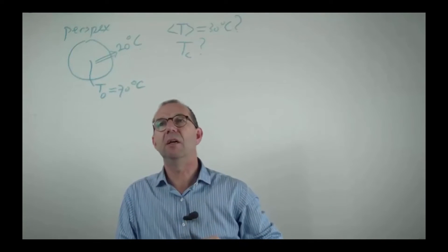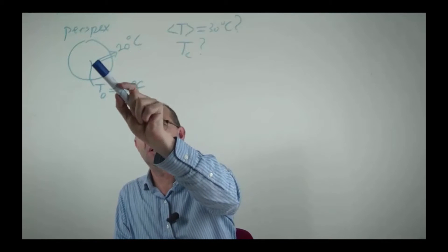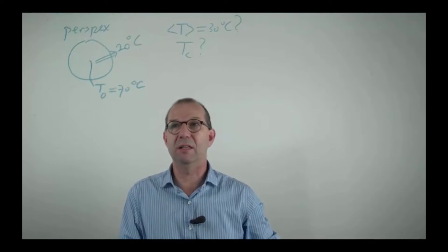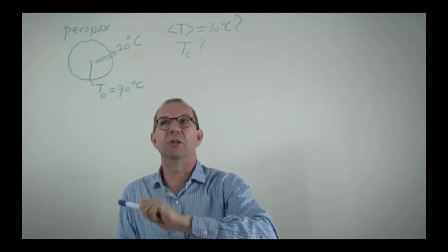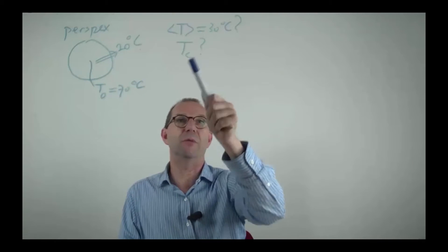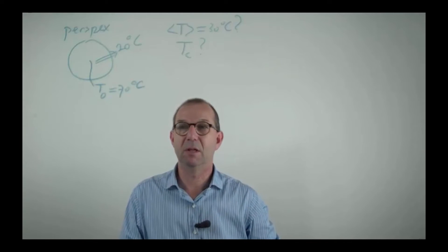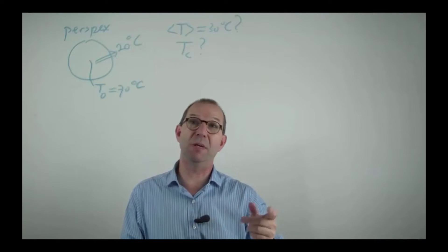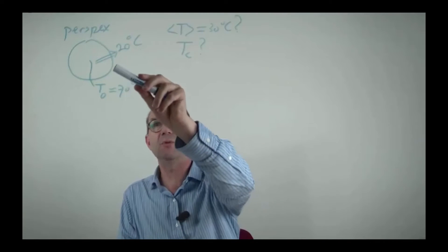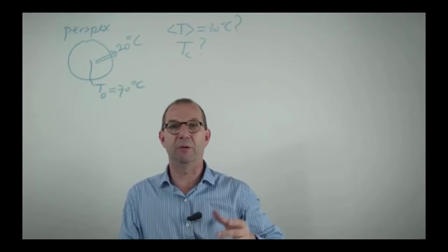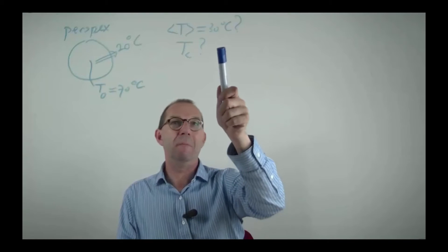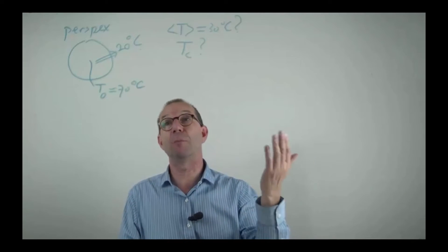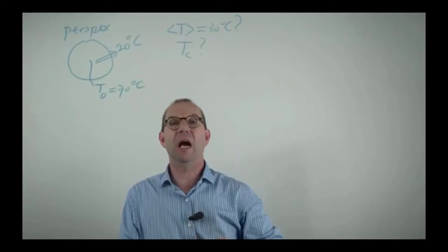This is clearly a case of heat conduction. Heat from the inside has to move outside. It's clearly also unsteady as the temperature of the perspex sphere will need to change from 70 to 30. Moreover you can quickly grasp that this must be long times. For short times only the boundary of the sphere will have changed its temperature and by no way can we expect that the mean temperature will then have dropped so much towards the outside temperature.